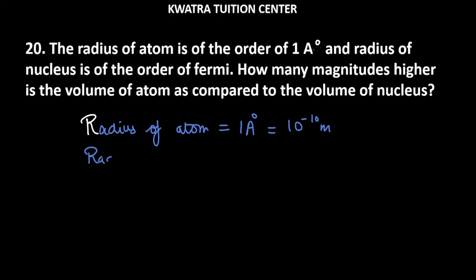Similarly, we have radius of nucleus. Radius of nucleus is 1 Fermi. Just as they have given us, it is equal to 1 Fermi. So 1 Fermi is 10 raised to power minus 15 meter.